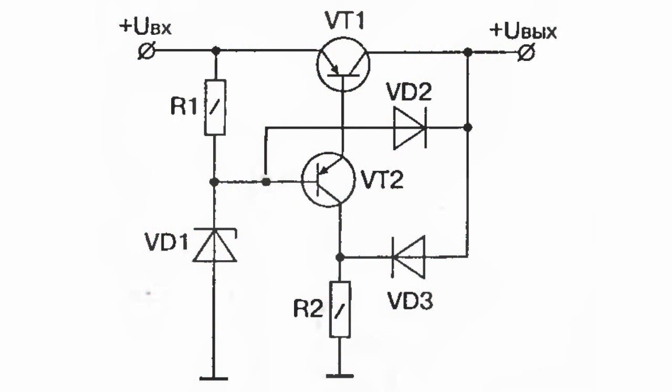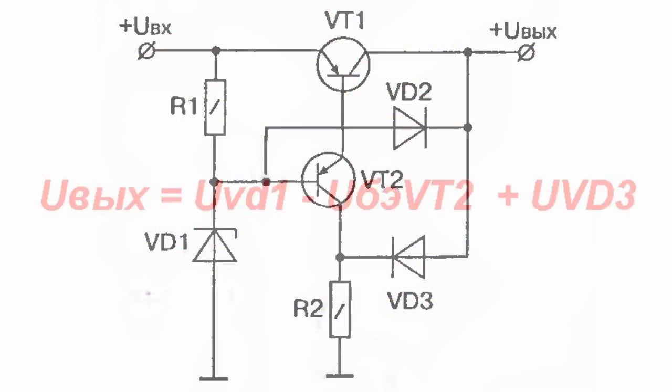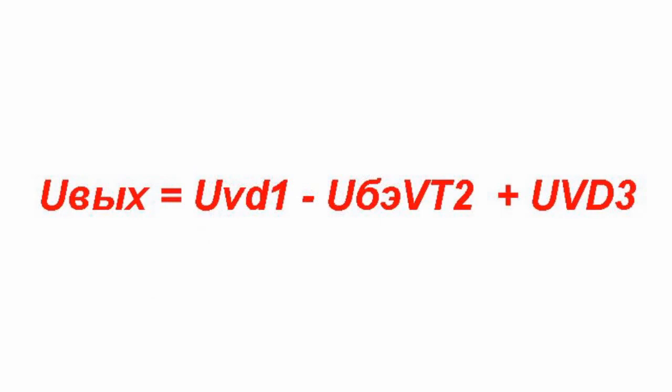The output voltage of the stabilizer is determined by the following ratio: the output voltage is equal to the difference between the stabilization voltage of the voltage reference diode and the voltage drop at the emitter-base junction of transistor VT2. The resulting value is added to the voltage drop on diode VT3 in direct connection, so the output voltage essentially equals the stabilization voltage of the voltage reference diode.